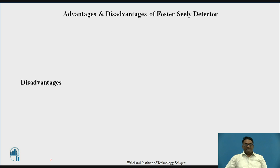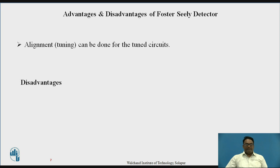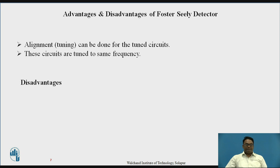What are the advantages and disadvantages of this detector? Firstly, alignment tuning can be done for the tuned circuits — similar frequencies can be tuned using capacitors C1 connected at the primary and C2 connected at the secondary, as these circuits are tuned to the same frequencies.